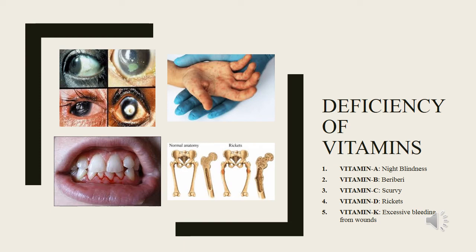Vitamin B causes beriberi. Its symptoms are weak muscles, fatigue, and very little energy. Vitamin C causes scurvy, a very common disease. Its symptoms are bleeding gums and wounds that take longer to heal. Vitamin D causes rickets, also a very common disease, where bones become soft and bent due to lack of vitamin D. Vitamin K deficiency causes excessive bleeding from wounds and the mouth.